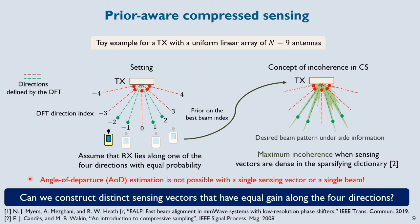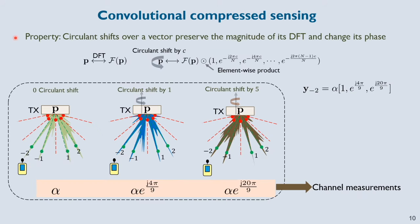This green beam has equal gain along the 4 directions where the receiver is likely to be there and negligible or 0 gain along the remaining 5 directions. Although this green beam is good from a CS perspective, direction of departure cannot be estimated with just this beam. Now the question is how to construct distinct sensing beams that have equal gain along the 4 directions as shown here. To achieve this, we leverage the property that circular shifts over a vector preserve the magnitude of its DFT while changing its phase.